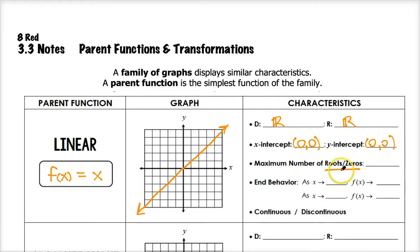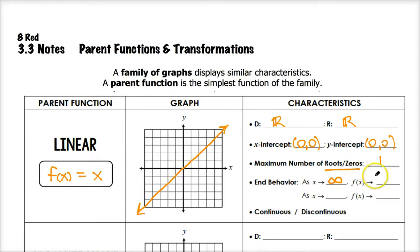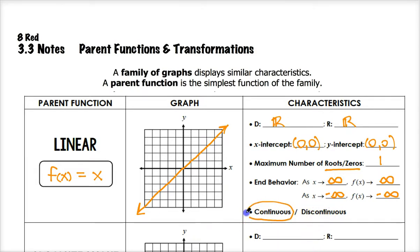The maximum number of roots and zeros — where a line crosses the x-axis — is one; a line will never have more than one x-intercept. For end behavior: as x approaches infinity, f(x) also approaches infinity. As x approaches negative infinity, y values also get smaller. This is the notation we use to describe end behavior. This graph is continuous because all the points are connected.